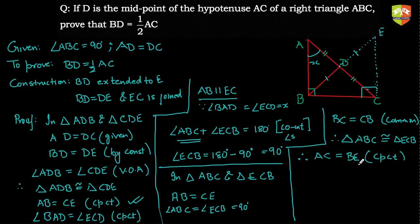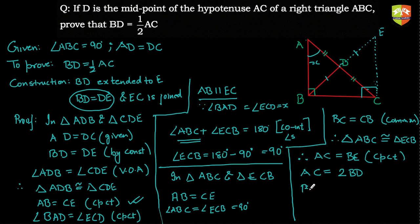Since AC equals BE, and BD equals DE by construction, we have AC equals BE equals 2 times BD. Therefore BD equals half AC, which is what we wanted to establish. The proof is complete.